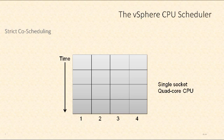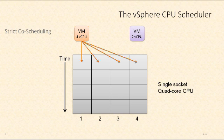Here we have two virtual machines running on an ESXi host with a single-socket quad-core CPU. The virtual machine on the left has four virtual CPUs, so when it needs to carry out instructions, it's going to try to simultaneously use four processor cores. At that moment, the four-vCPU virtual machine is using all the processor cores, so if the virtual machine on the right wants to execute something, it has to wait until the next time slot.